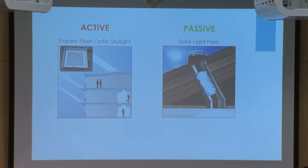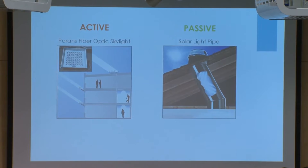For active systems, we have the parabolic fiber optic skylight, which is one of the most prominent systems. It has a tracking system combined with a bundle of optical fibers, and that's how it guides light throughout your structure. For passive systems, the most common one is a light pipe — basically a tube with a reflective material lining the inside that reflects light through your roof into the room.